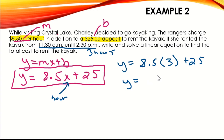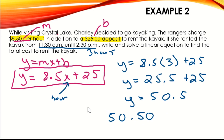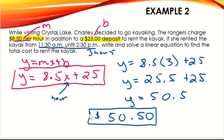8.5 times 3 is $25.50, plus the $25 deposit gives us $50.50. So the total cost she is going to pay to rent the kayak is $50.50.